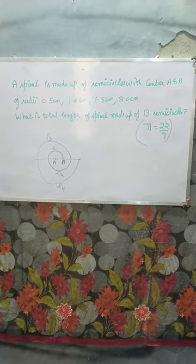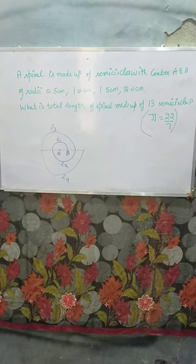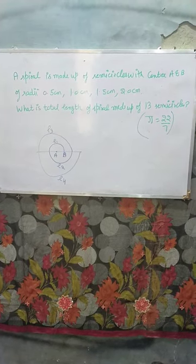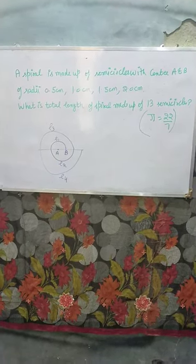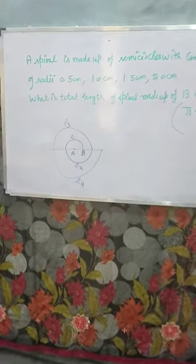Hello students, a spiral is made up of semicircles with center A and B of radii 0.5, 1.0, 1.5, 2.0 centimeter. What is the total length of spiral made up of 13 semicircles? This is the diagram.